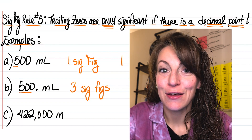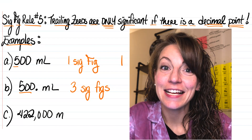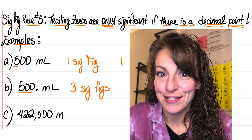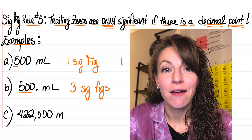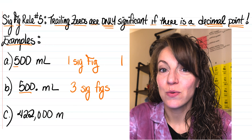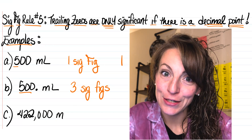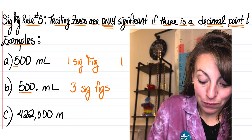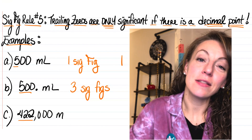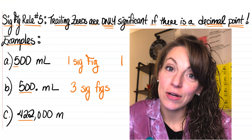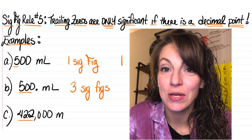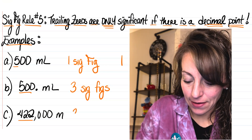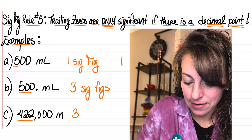So 500 with the decimal point has a greater number of sig figs, indicating that the instrument used to take that measurement was much more precise. Let's take a look at letter C. In letter C, we have 422,000 meters. Now there are three nonzero digits and then three trailing zeros, but there's no decimal point, so we only have three sig figs in this measurement.